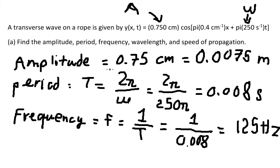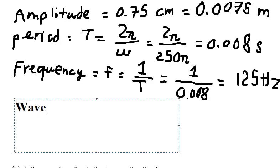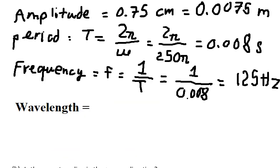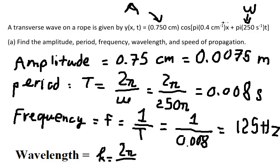Next is the wavelength. For the wavelength, we use the formula k equals 2π over lambda, where lambda is the wavelength.